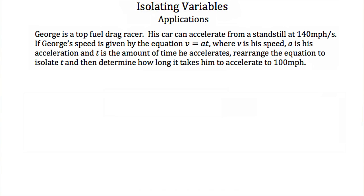Here we're told George is a top fuel drag racer. His car can accelerate from a standstill at 140 miles per hour per second. George's speed is given by the equation v is equal to at, where v is his speed, a is his acceleration, and t is the amount of time he accelerates for. We're asked to rearrange the equation to isolate t. To do that, we just divide both sides by a, and we get t is equal to v over a.